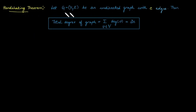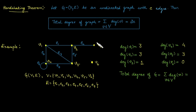Handshaking theorem: for an undirected graph with e edges, the total degree of the graph is calculated as the sum of the degrees of all vertices from the vertex set, which is further equal to two times the number of edges. In the previous example, we calculated the degree at each vertex, and the total degree can be calculated by summing them all up — giving a total degree of 14.